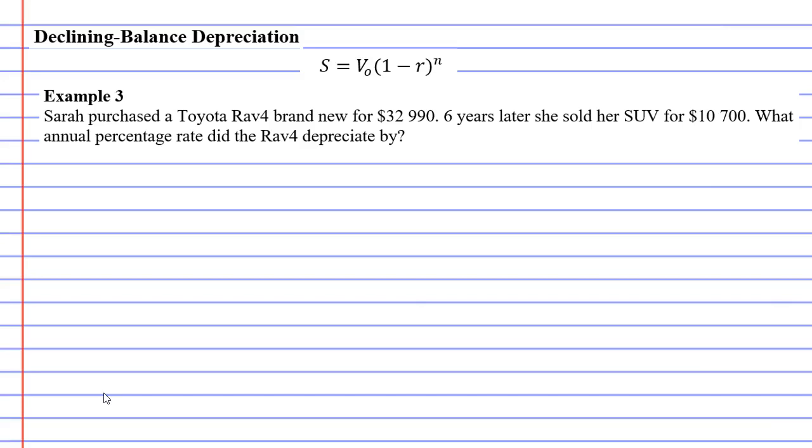Sierra purchased a Toyota RAV4 brand new for $32,990. So if it's brand new, that means V₀ is $32,990. Six years later, so N equals 6, she sold her SUV for $10,700. And when you sell it, that's your salvage value, which is $10,700.